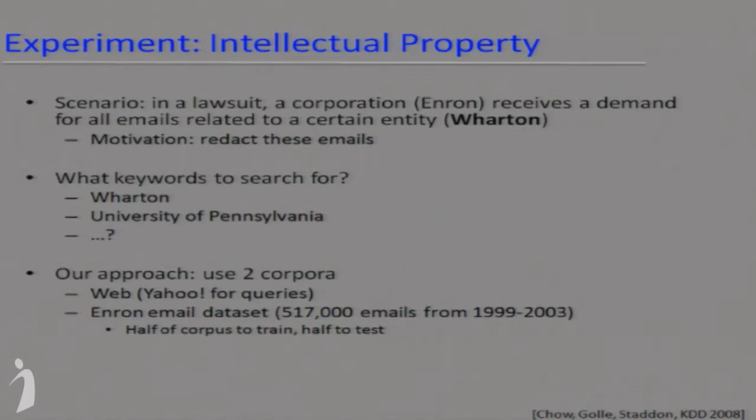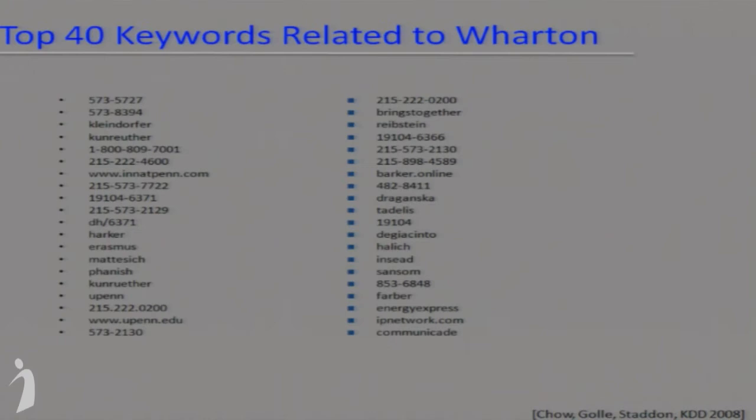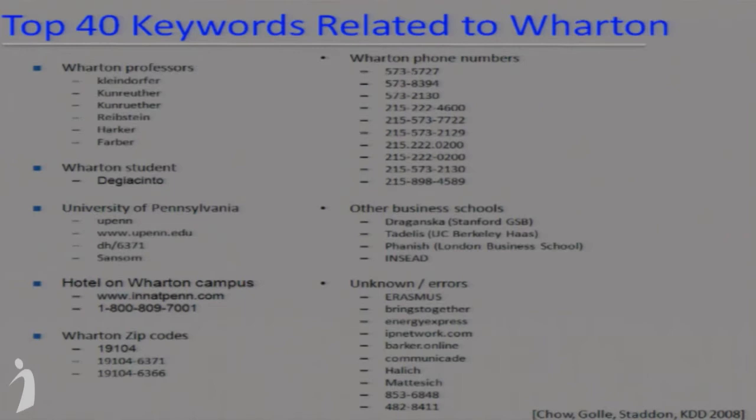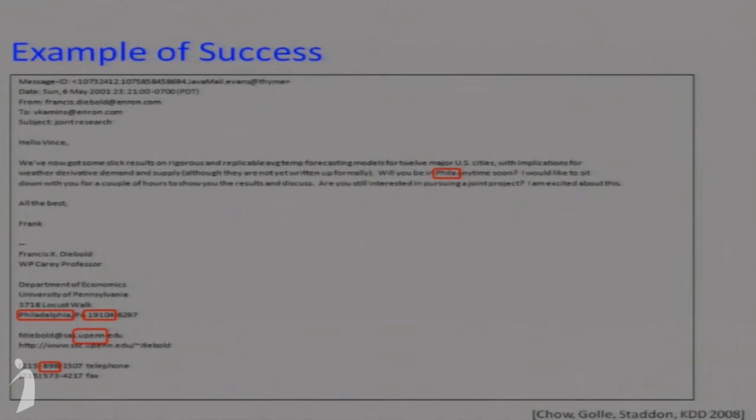The goal is to test how well this idea can expand into a list of keywords to catch the right emails. Using both the web and the Enron dataset itself — splitting it for training and testing — the top 40 keywords included Wharton professor names, students, phone numbers, zip codes related to Wharton, and some other business schools. An example of success: an email from Francis Diebold that doesn't mention 'Wharton' anywhere, but he's a Wharton professor, and the email contains many top-40 keywords like Philadelphia and parts of phone numbers.